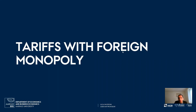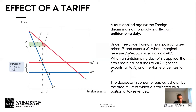We're looking at the case of a foreign monopoly — that means in the home economy there are no domestic firms producing the good. For instance, cars. We have domestic demand D, and as an example, think of Tesla as a foreign monopoly on electric cars.